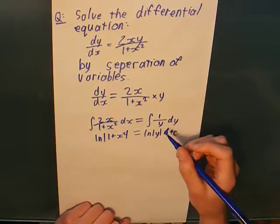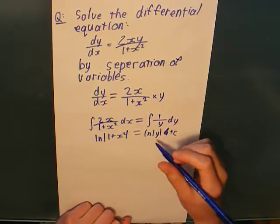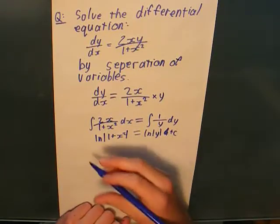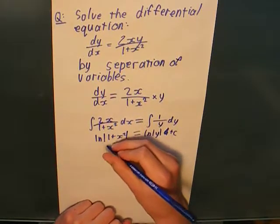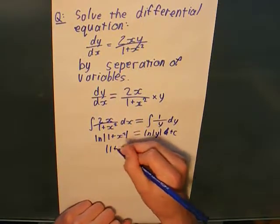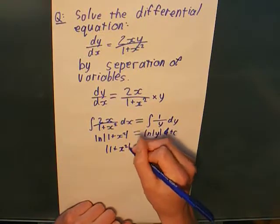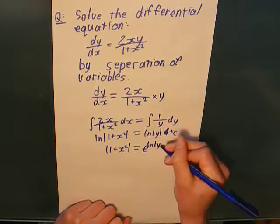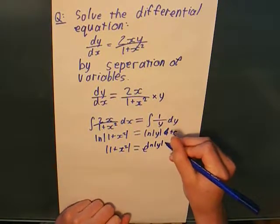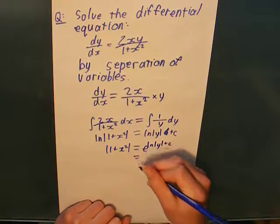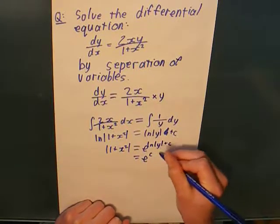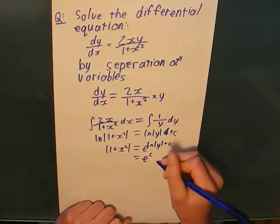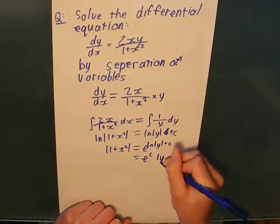Now, we can do e to the power of both sides, which is equivalent to canceling out the logarithms, but I'm doing this for a reason. So, this just goes to absolute value of 1 plus x squared equals e to the ln of absolute value of y plus c equals e to the c times e to the ln of y, absolute value of y, or just absolute value of y.